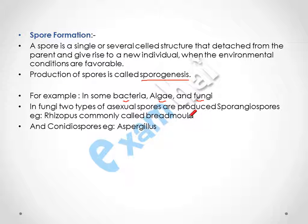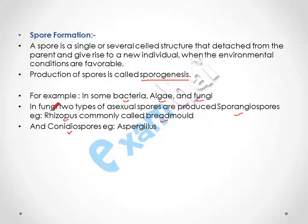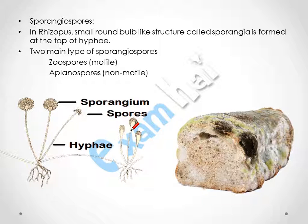The two types of asexual spores in fungi are: sporangiospore and conidiospore. The example of sporangiospore is Rhizopus, which is commonly called bread mold — you may have observed the Rhizopus fungus present on rotten bread. The example of conidiospore is Aspergillus.